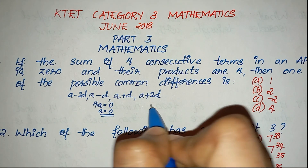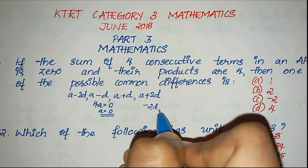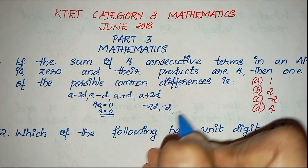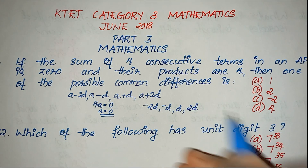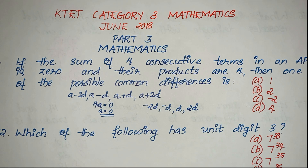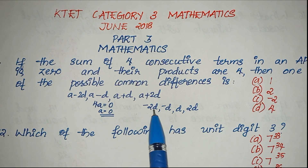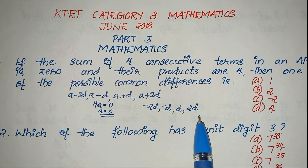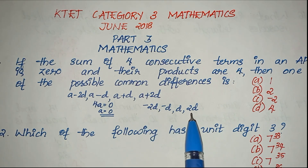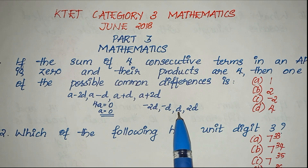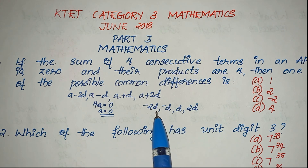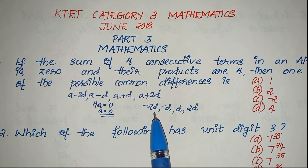Since A is equal to 0, we take the arithmetic sequence as: minus 2D, minus D, D, and 2D. If we find their product, it equals 4. We get 2 times 2 equals 4, and working through the calculation: 4D squared equals 4, giving D squared equals 1, so D equals 1 or D equals negative 1. The possible common difference is 1 or negative 1.